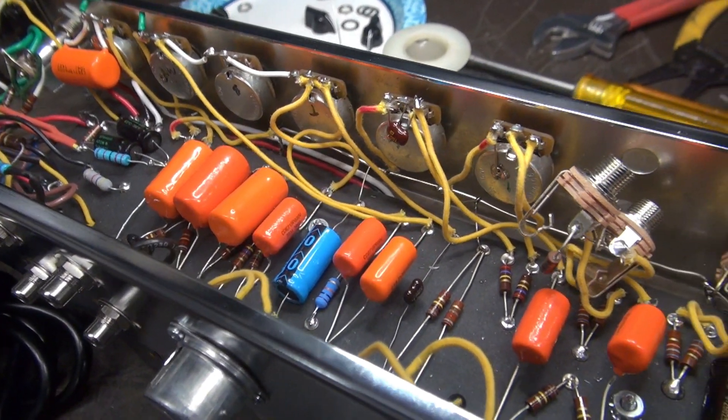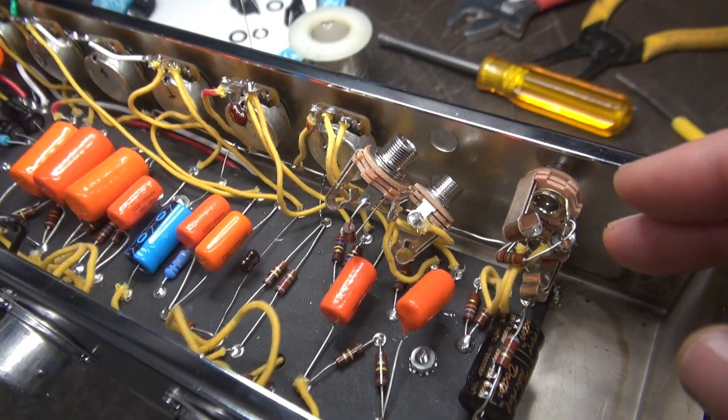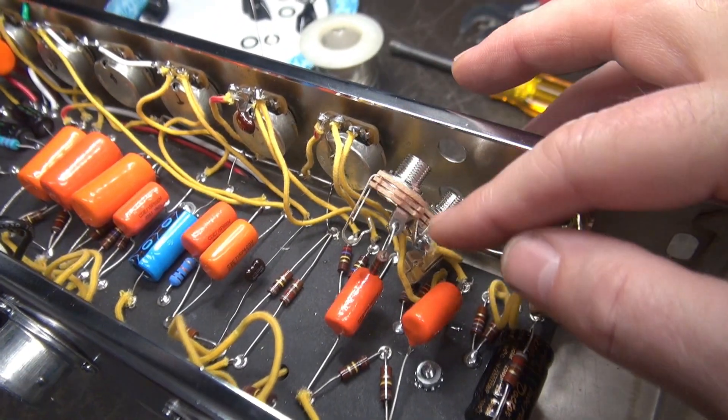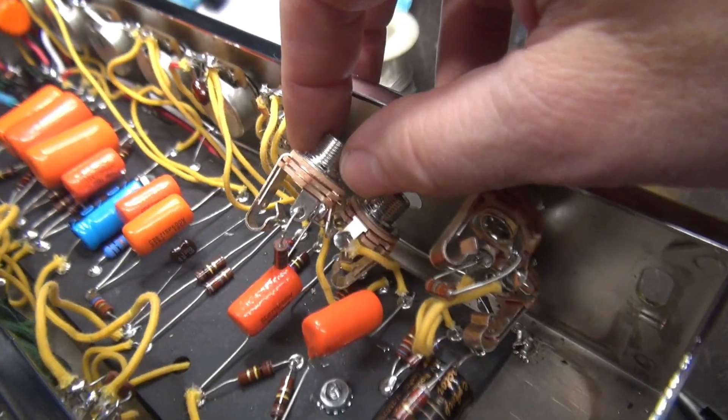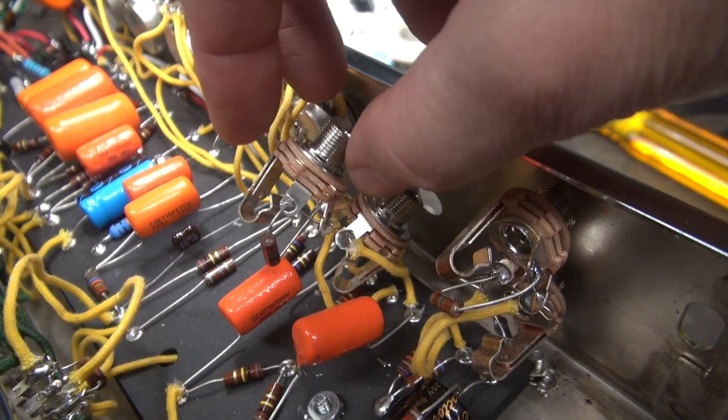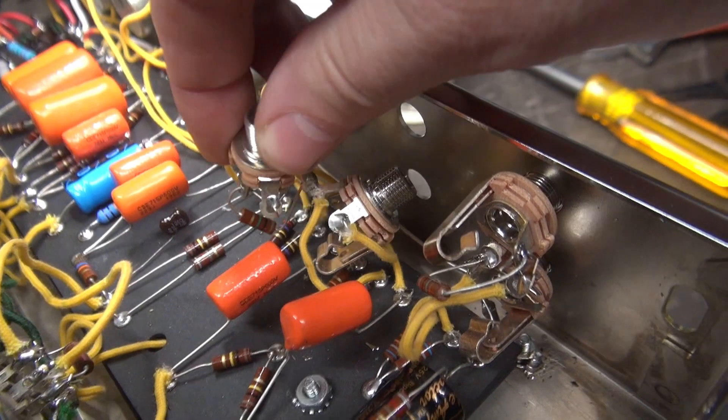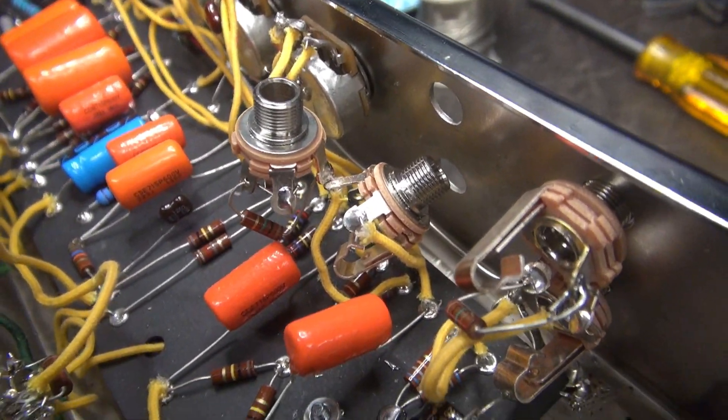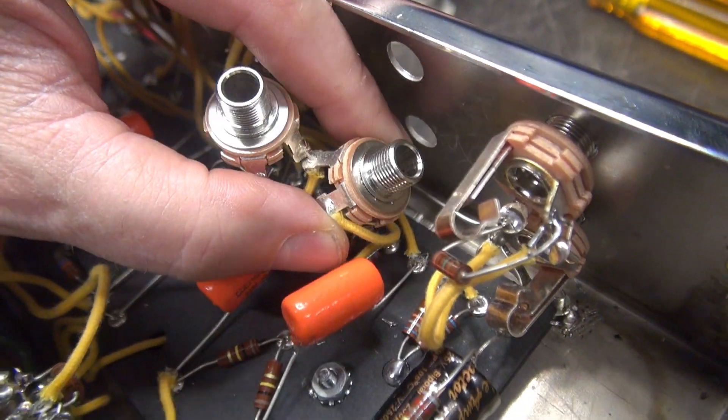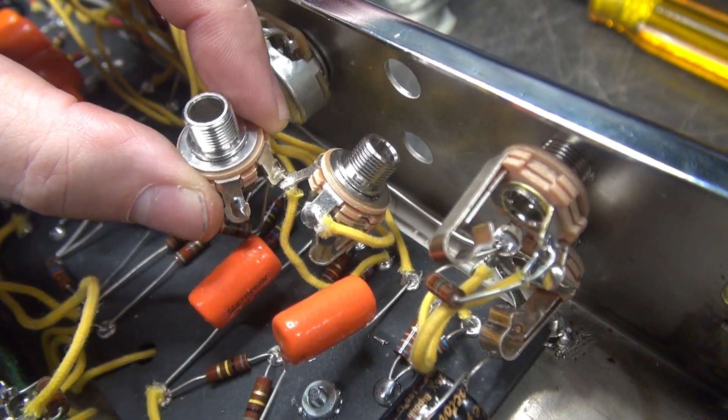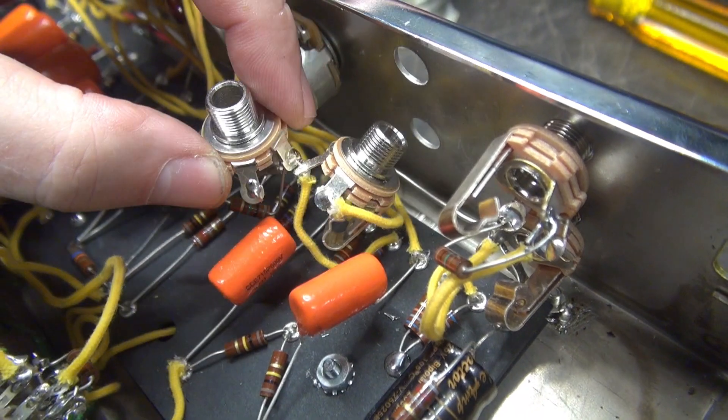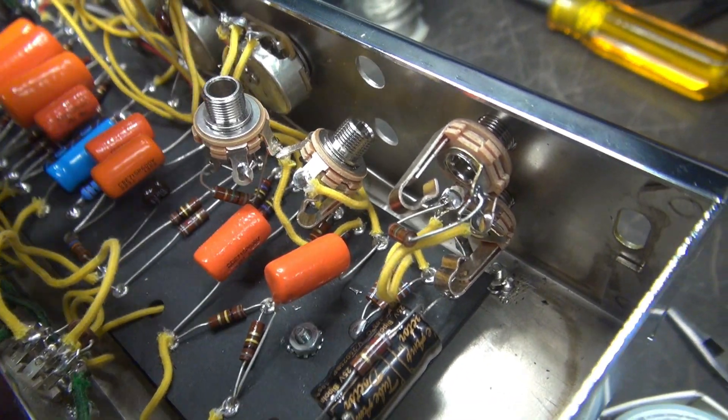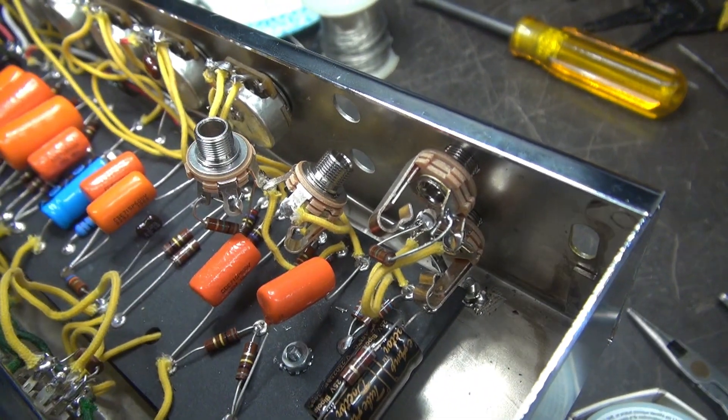I've resolved all the ground issues. Now we need to clean up these input jacks. Get these flying one meg resistors tucked down on the jack itself. And I noticed, if you look right here, it's kind of hard to see, but these two are supposed to be tied together. See that white powder down there? Well that's because that lead is not soldered to the bottom jack. Cold connection. So anyway, I'm going to redo all this, make it nice, add some lock washers.